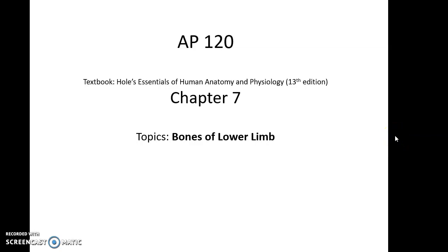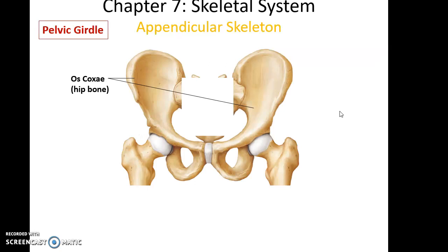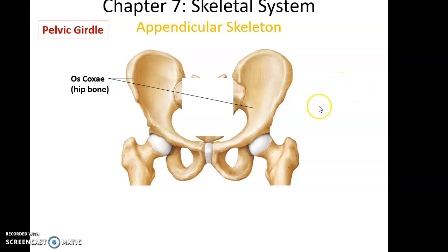AP 120, Chapter 7: Bones of Lower Limbs. We're continuing with the appendicular skeleton, now talking about the bones for the lower limbs.